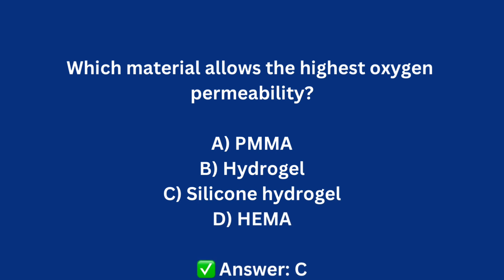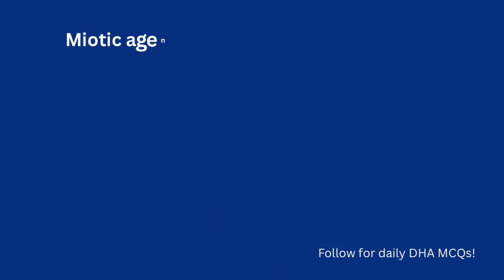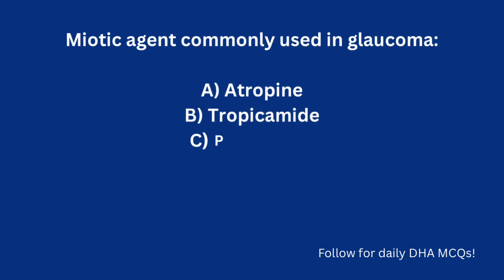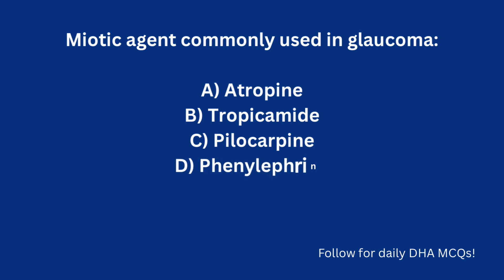Which material allows the highest oxygen permeability? A) PMMA, B) Hydrogel, C) Silicone hydrogel, D) PAAMA. Correct answer: C) Silicone hydrogel. Miotic agent commonly used in glaucoma: A) Atropine, B) Tropicamide, C) Pilocarpine, D) Phenylephrine. Correct answer: C) Pilocarpine.